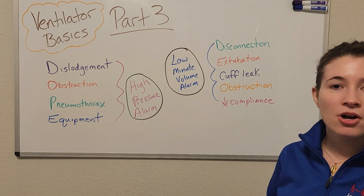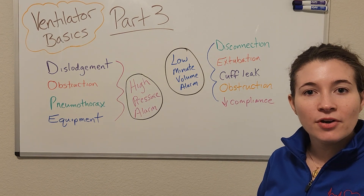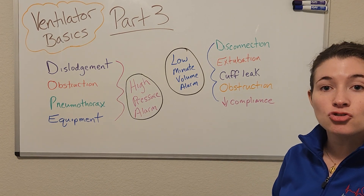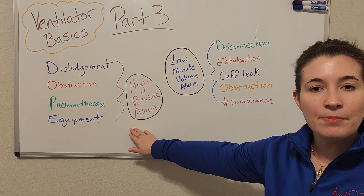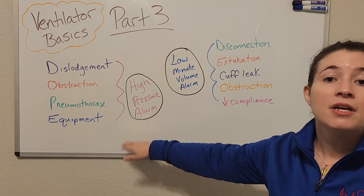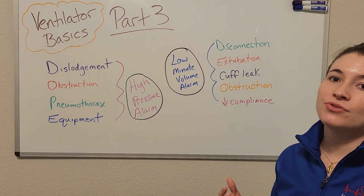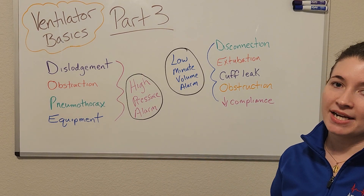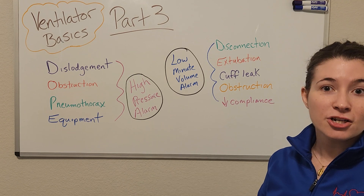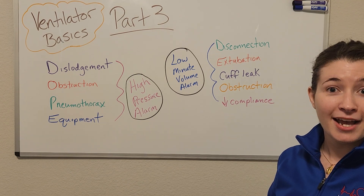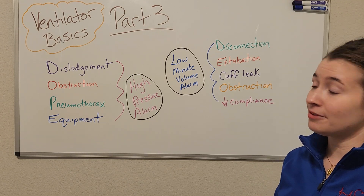Another common cause of a low minute volume alarm is obstruction, which we already talked about in the high pressure alarm section. You would use the same techniques to fix it: suctioning and/or sedation.